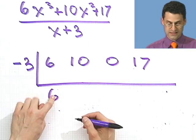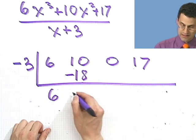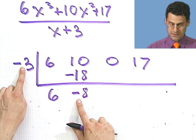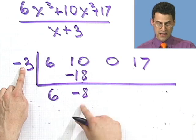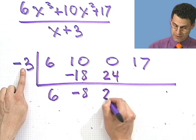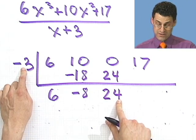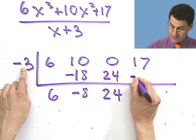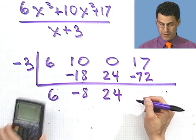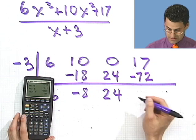Copy the first 6 down. Take 6 times minus 3 and get minus 18. Then add to get minus 8. Then minus 3 times minus 8 gives plus 24. Add to get 24. Then take 24 times minus 3 and get minus 72. Then add: minus 72 plus 17 gives minus 55.